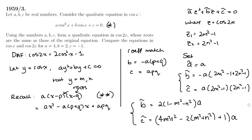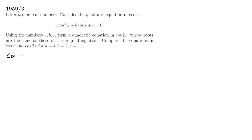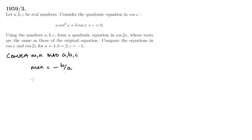We now have Ã, B̃ and C̃ as the coefficients of our target equation in terms of m and n. But we want m and n expressed in terms of a, b and c per our requirement. We know b and c are coefficients of the original equation, and m and n are its roots. So we can use the sum and product of roots rule: m plus n equals minus b over a, and mn equals c over a.